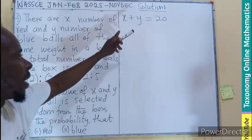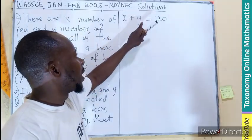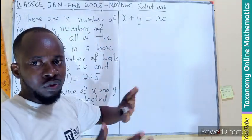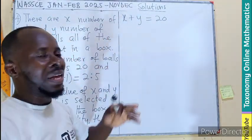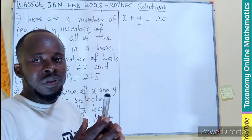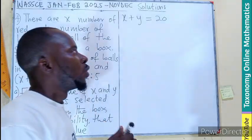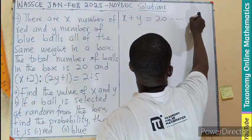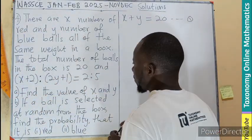There are red and there are blue. Add the two together, you get it. Since X and Y are variables that are unknown, we can label that as equation 1.